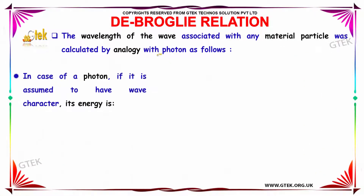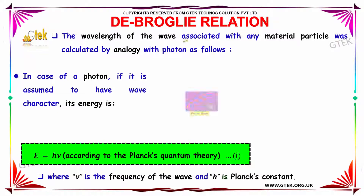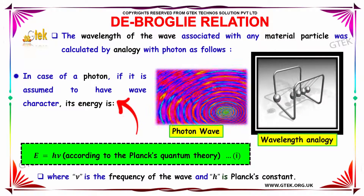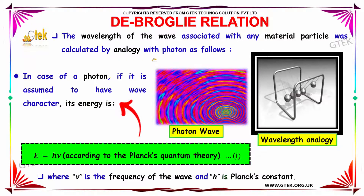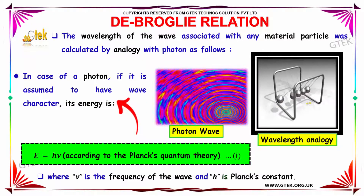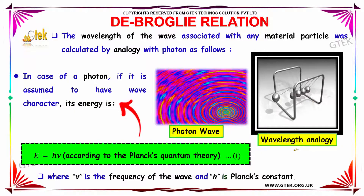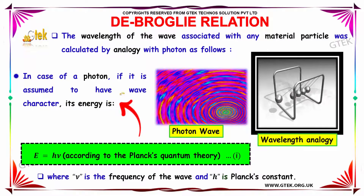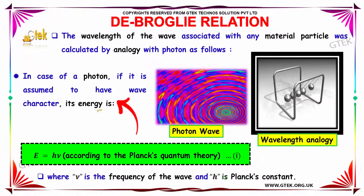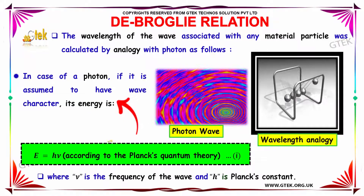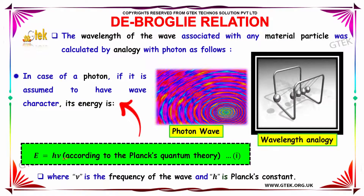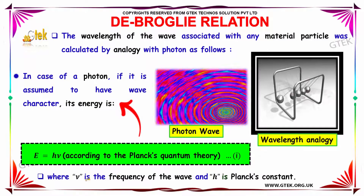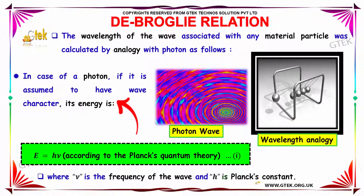The wavelength of the wave associated with any material particle was calculated by analogy with the photon. In the case of a photon, it is assumed to have a wave character, and its energy is E = hν. According to Planck's quantum theory, ν is the frequency of the wave and h is Planck's constant.